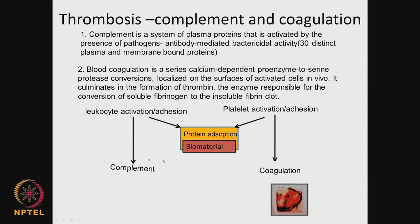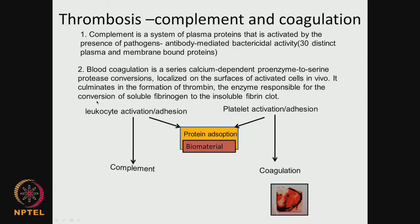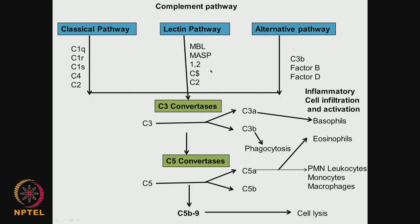Complement has 3 pathways: the classical pathway, the lectin pathway, and the alternate pathway. As mentioned, there are almost 30 distinct plasma or membrane-bound proteins, which all get activated in different sequences. They in turn activate eosinophils, basophils, monocytes, and macrophages. Once activated, they can even kill cells — so cell lysis also takes place.